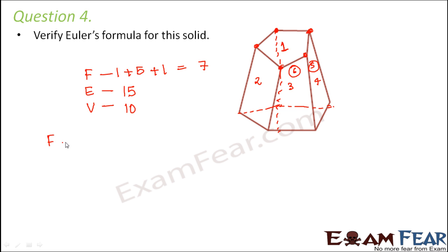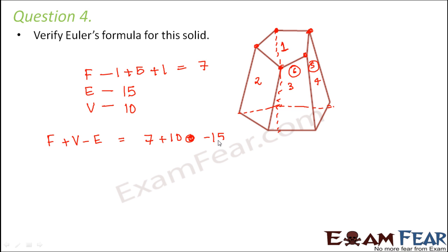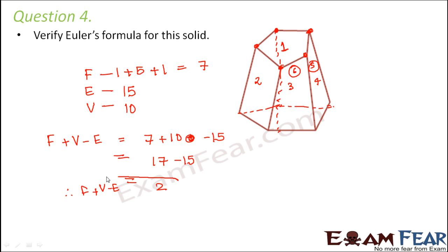As per Euler's formula, F plus V minus E should equal 2. Here F is 7, V is 10, and E is 15. So 7 plus 10 minus 15 equals 17 minus 15, which equals 2. Therefore Euler's formula holds true for this solid, which proves that this solid is a polyhedron.